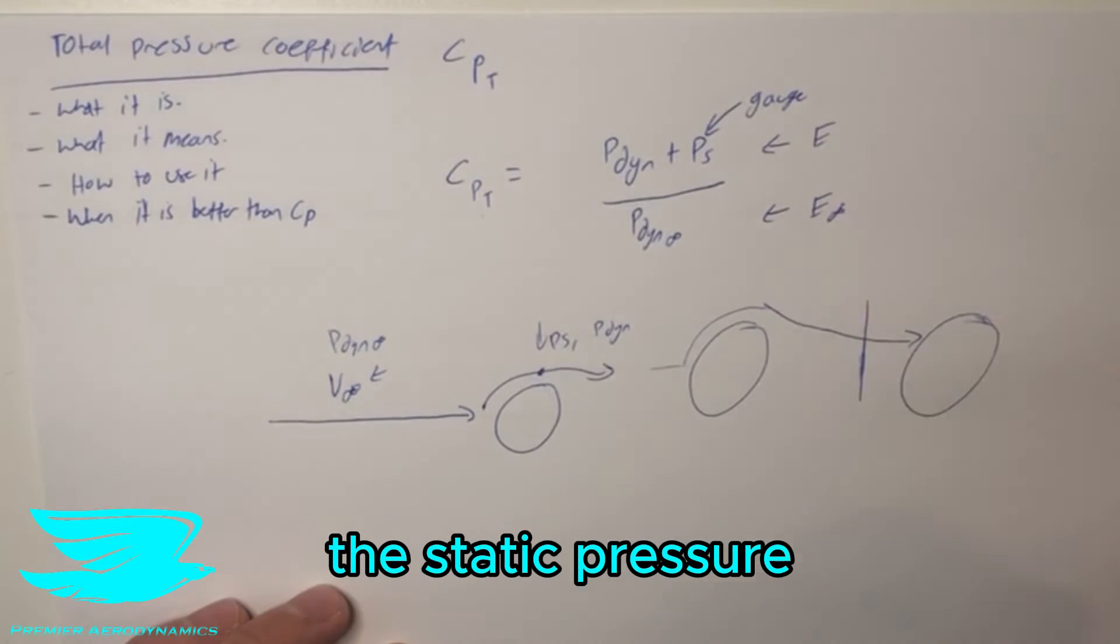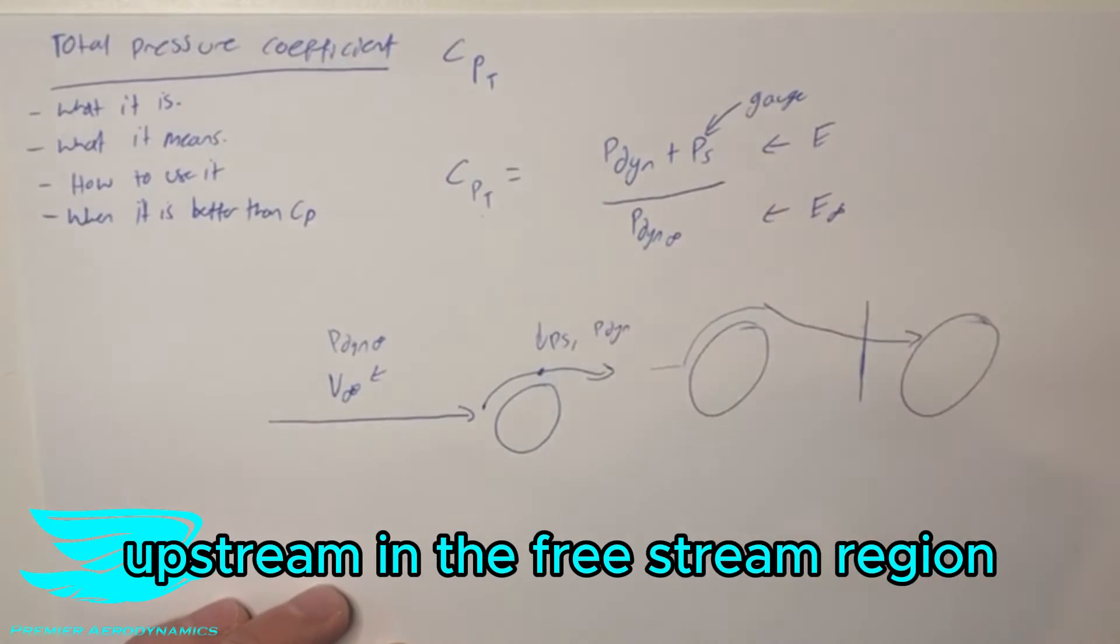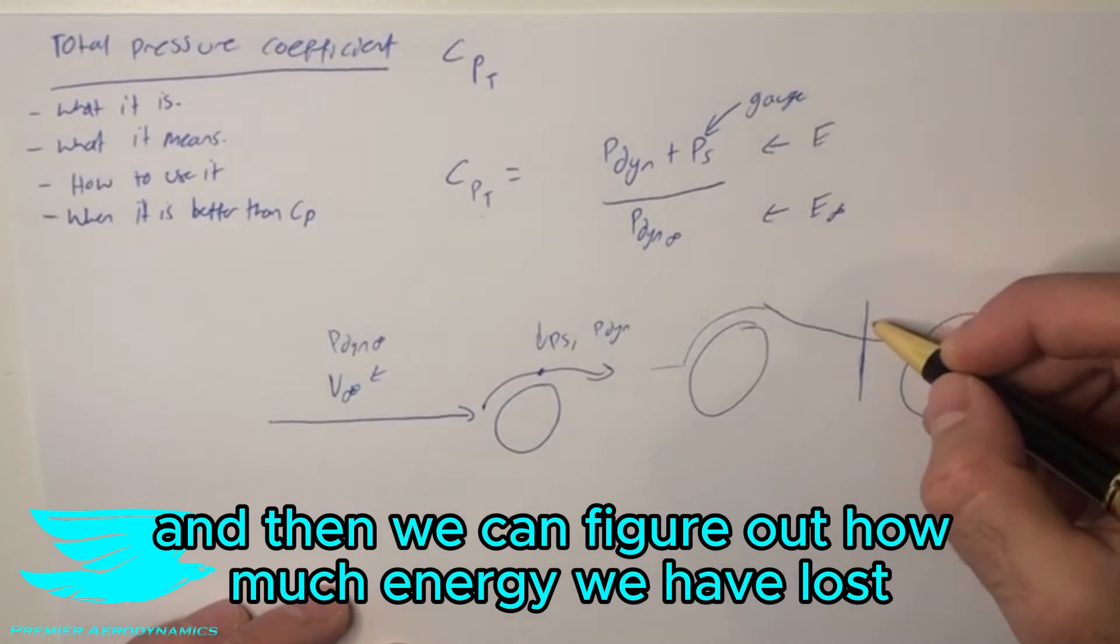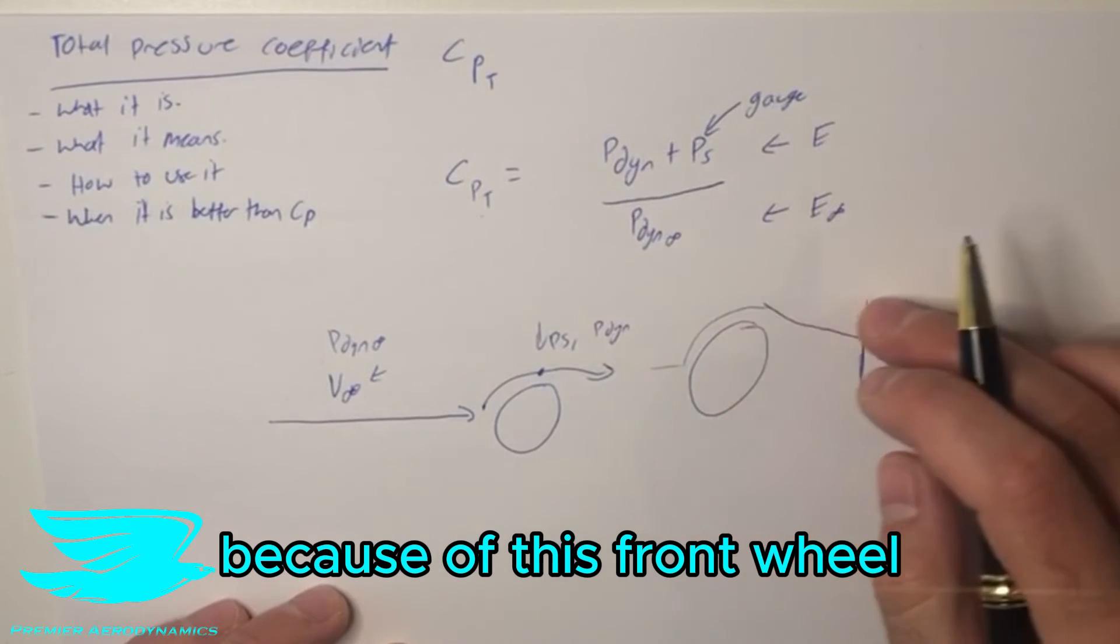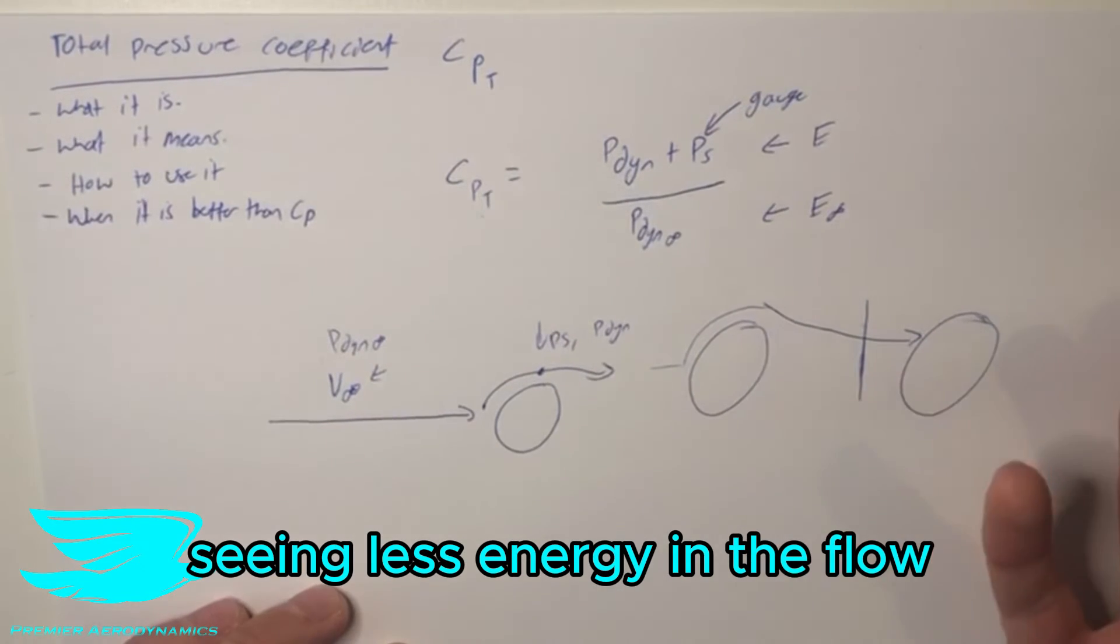We take measurements of the static pressure and the dynamic pressure and we figure out what the dynamic pressure is upstream in the freestream region. And then we can figure out how much energy we have lost because of this front wheel that is then resulting in the rear wheel seeing less energy in the flow effectively.